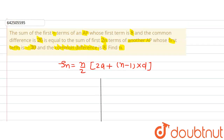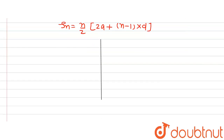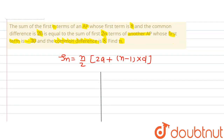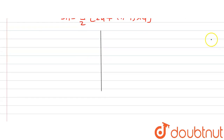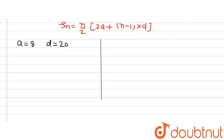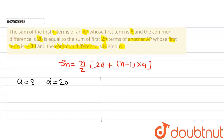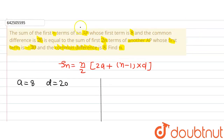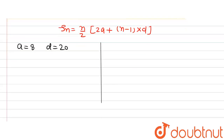Now let's consider the first AP. In the first AP, the first term is 8 and the common difference is 20, that means a is equal to 8 and d is equal to 20. Now putting in the values we can find out the sum of first n terms of the first AP.